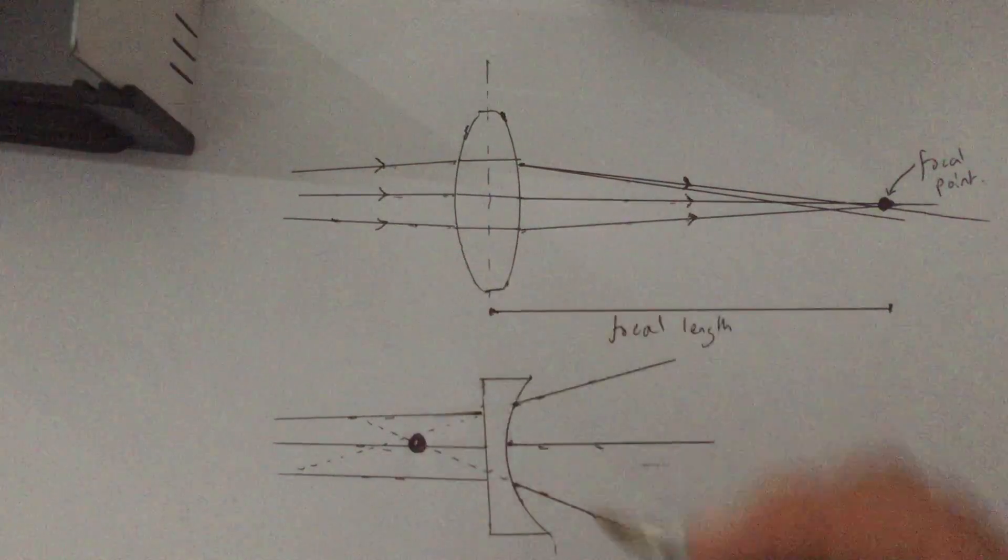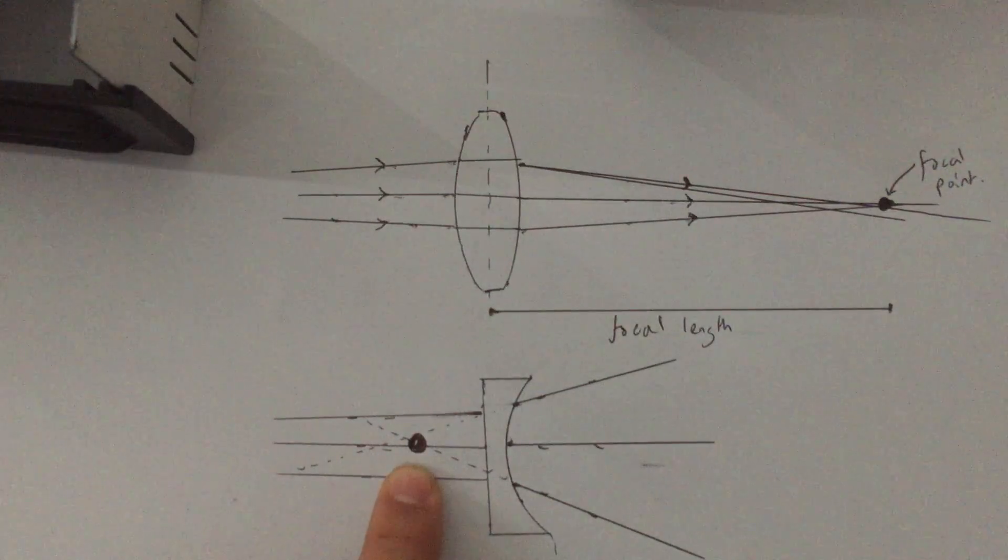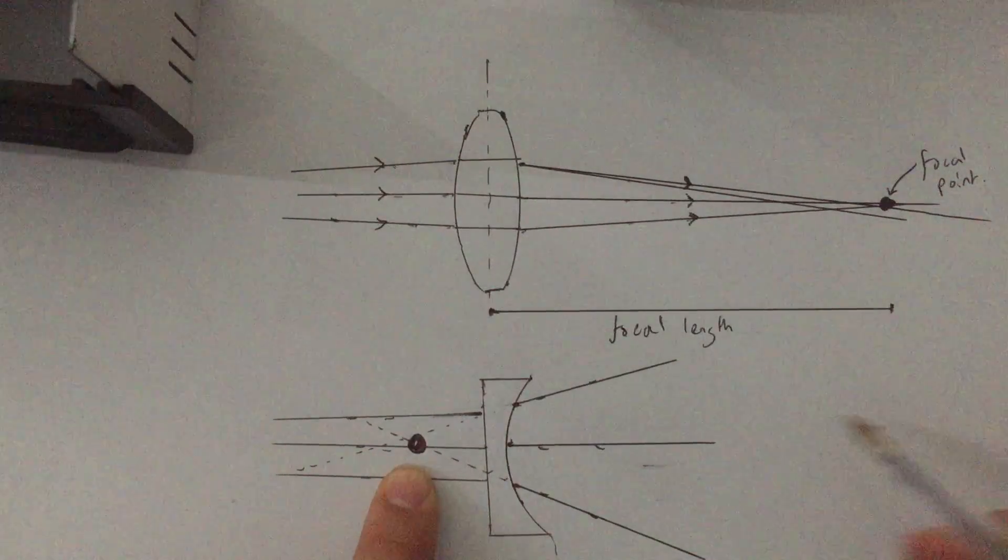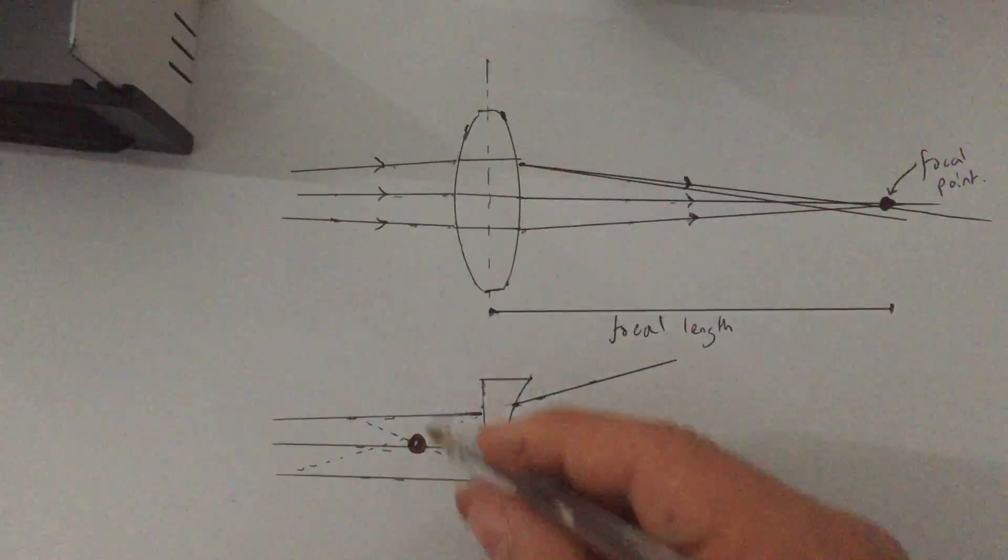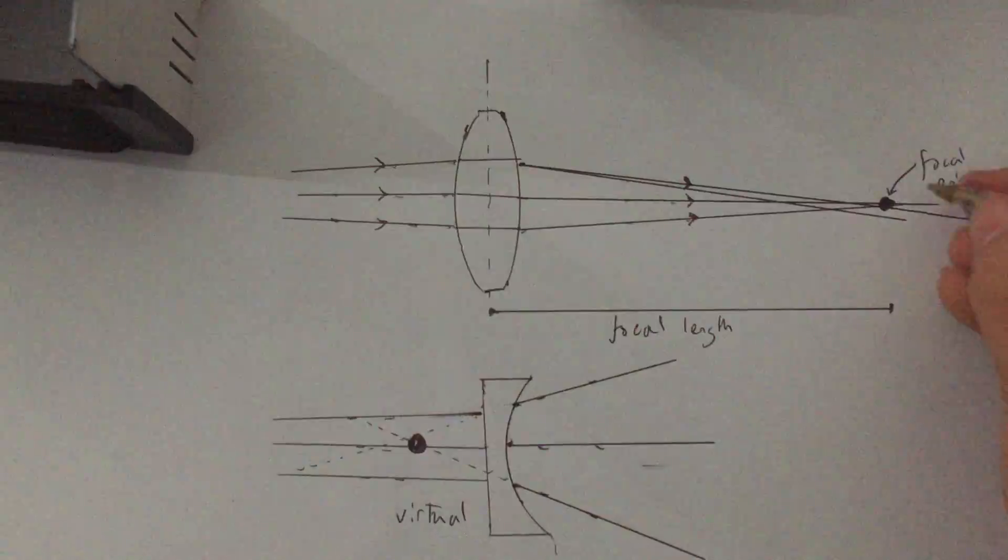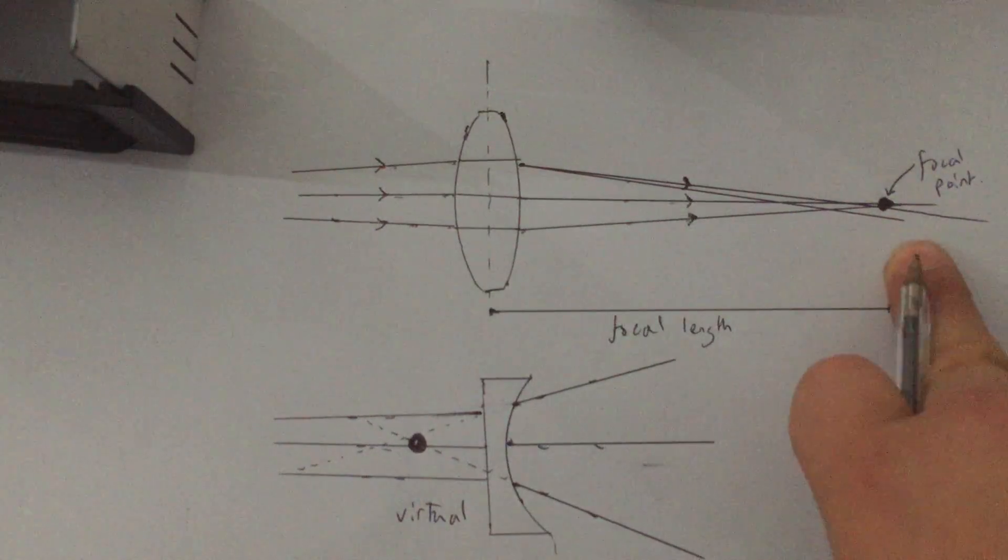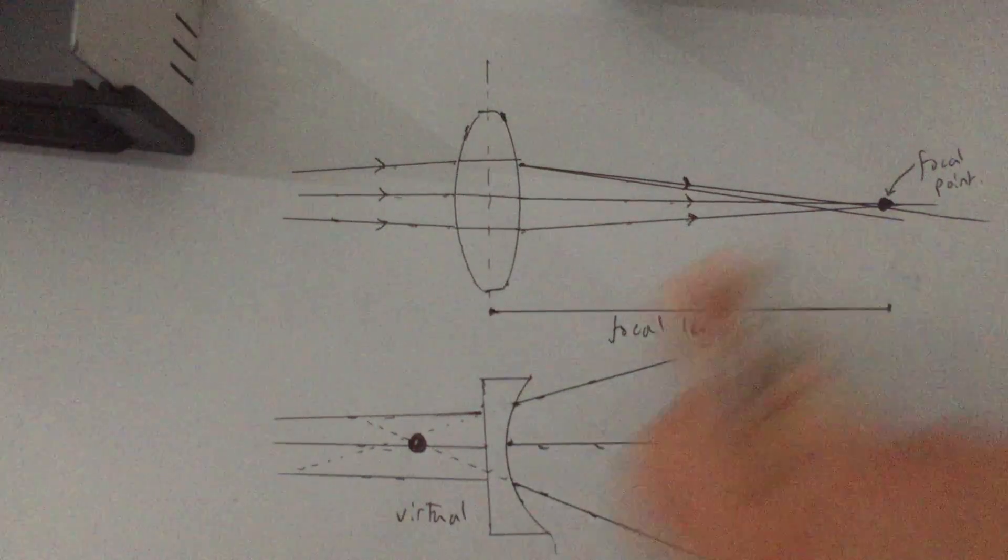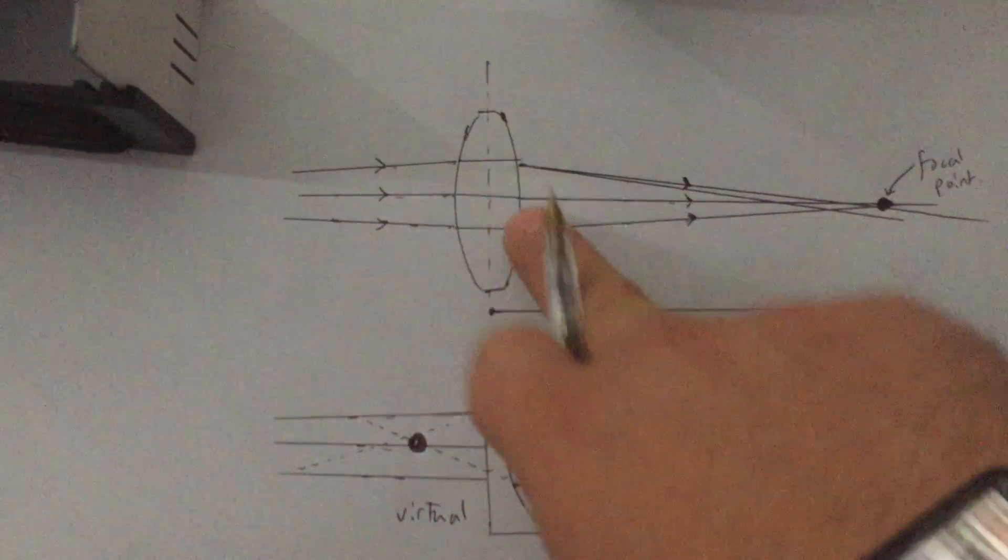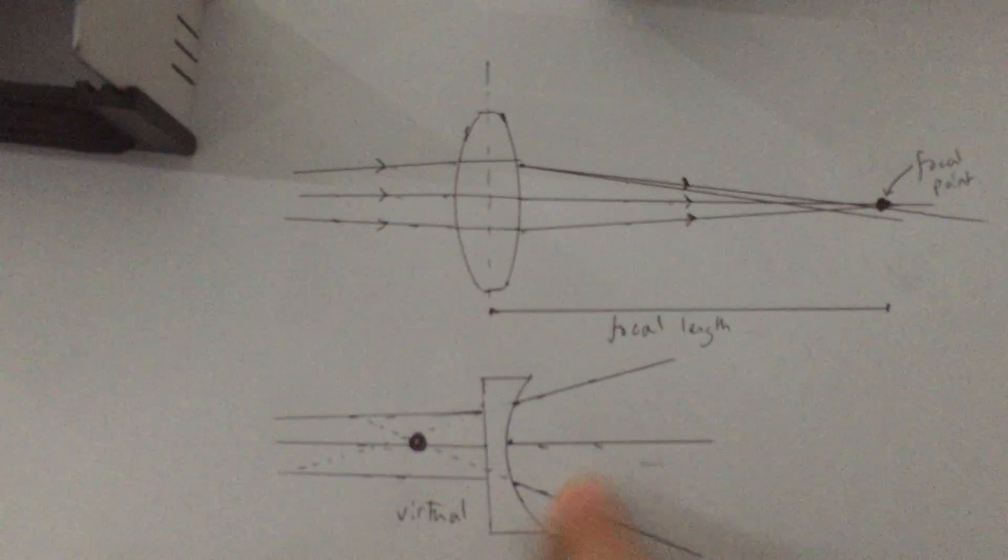This is now the focal point. You can see that the focal point is actually not in front of the lens, it's behind the lens. So the focal point here forms what we would call a virtual image, as opposed to the focal point here, which forms a real image. You only need to know that if you're doing triple physics and looking at the differences between convex and concave lenses.